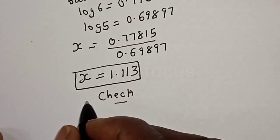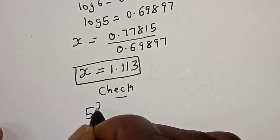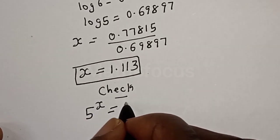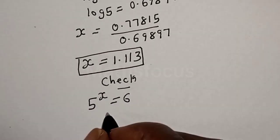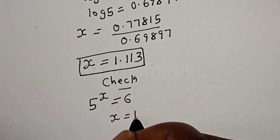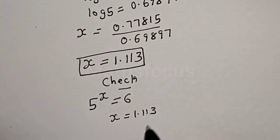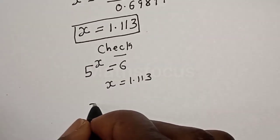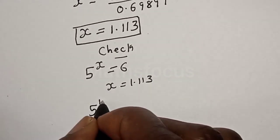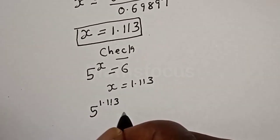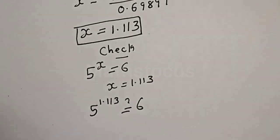We have the given equation: 5 raised to power x is equal to 6. Then, s is equal to 1.113. We have 5 raised to power 1.113 must be equal to 6.